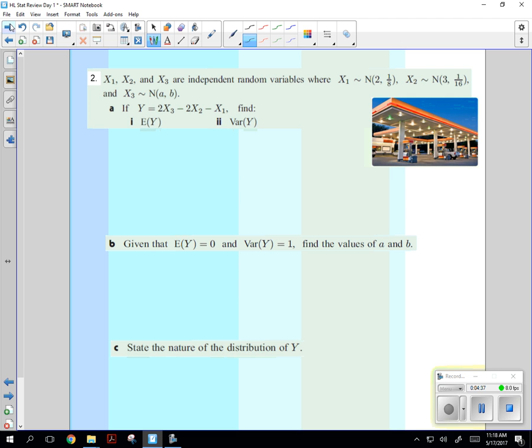Last one. This one's cool because it ties things together. X₁, X₂, X₃ are these variables. This is the normal calling 2μ, one-eighth is your δ². 2, 3 is μ for X₂, and this is δ². A is μ for X₃, and then this B is δ². Okay, they're saying if Y is 2X₃ minus 2X₂ minus 1, find E of Y and variance of Y. I think you can do it. Let's do it.